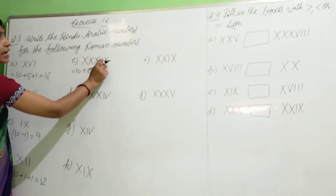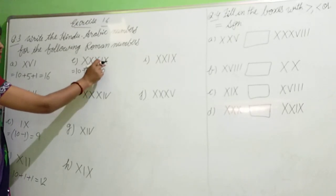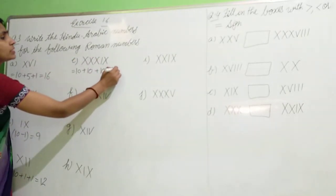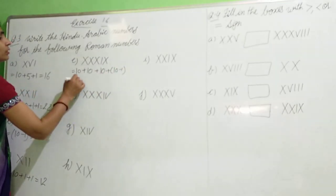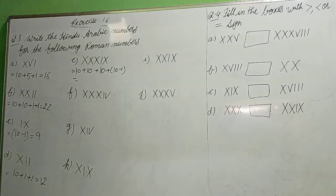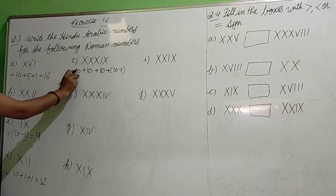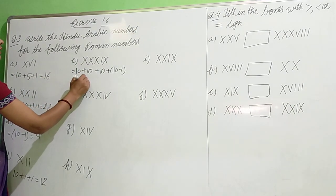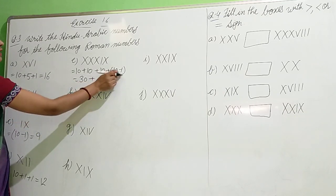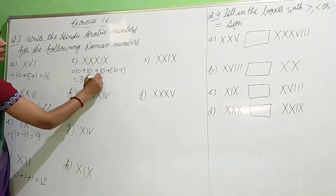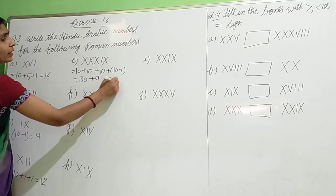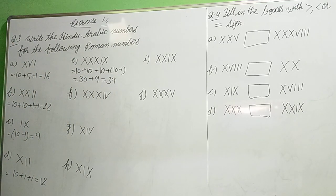X three times, then I X bar — that means subtraction, so 10 minus 1. It means 10 plus 10 plus 10 is 30, three times. So 30 plus 10 minus 1, what happened? 9. So 30 plus 9 equals 39. So 39 is the answer.